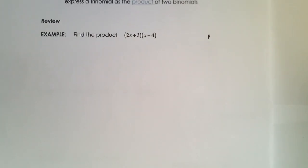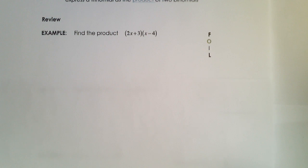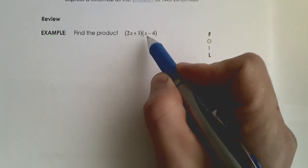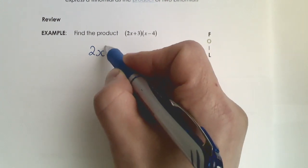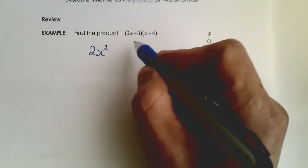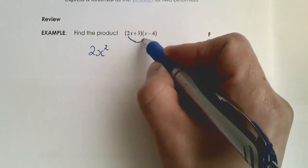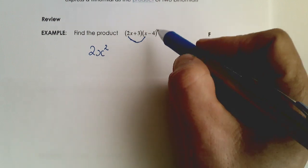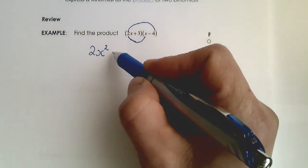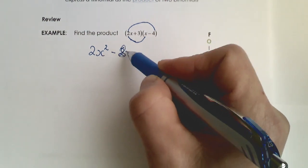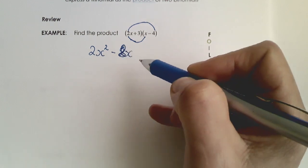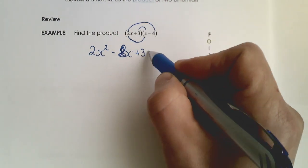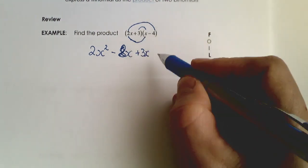Let's first review FOIL very quickly and notice some important patterns. You already know how to do FOIL. First, we multiply the first terms, giving us 2x squared. Then we multiply the outside terms: 2x times negative 4 is negative 8x. Then inside: 3 times x is positive 3x. And the last term is negative 12.